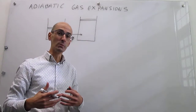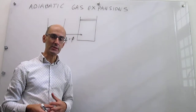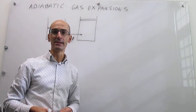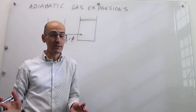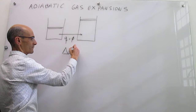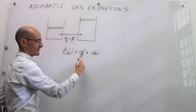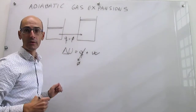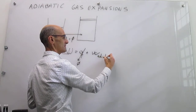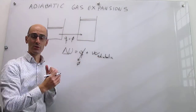Our goal for this video is to think about how we approach these adiabatic expansions. We will delve deeper into the relationships of the physical state variables in subsequent videos. Let's set up what the first law looks like for this type of process. Since the process is adiabatic, the heat term is zero, and we can write the work as the adiabatic work.